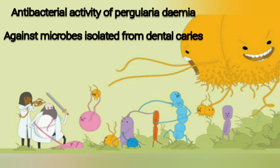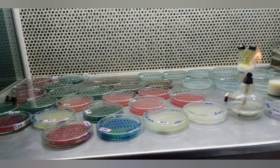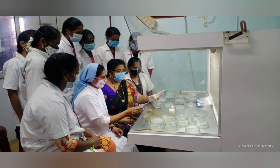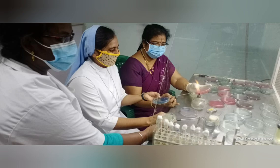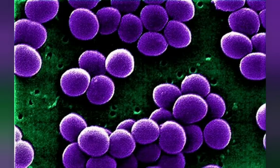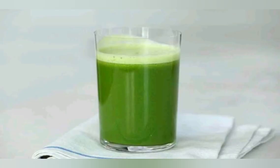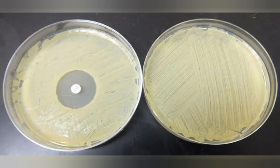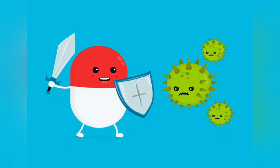Our present study aims to investigate the antibacterial activity of dried leaves of Pergularia demia against microbes isolated from dental caries. Samples were collected from volunteers and inoculated on agar plates. After incubation, different colonies were observed, subjected to various biochemical tests, and two microbes were isolated: Staphylococcus species and Streptococcus species. Leaf extract of Pergularia demia was prepared, discs were soaked in the extract for a day, then placed on agar plates inoculated with the isolated species. The leaf extract showed great inhibition against dental caries pathogens, and the zone of inhibition was measured.